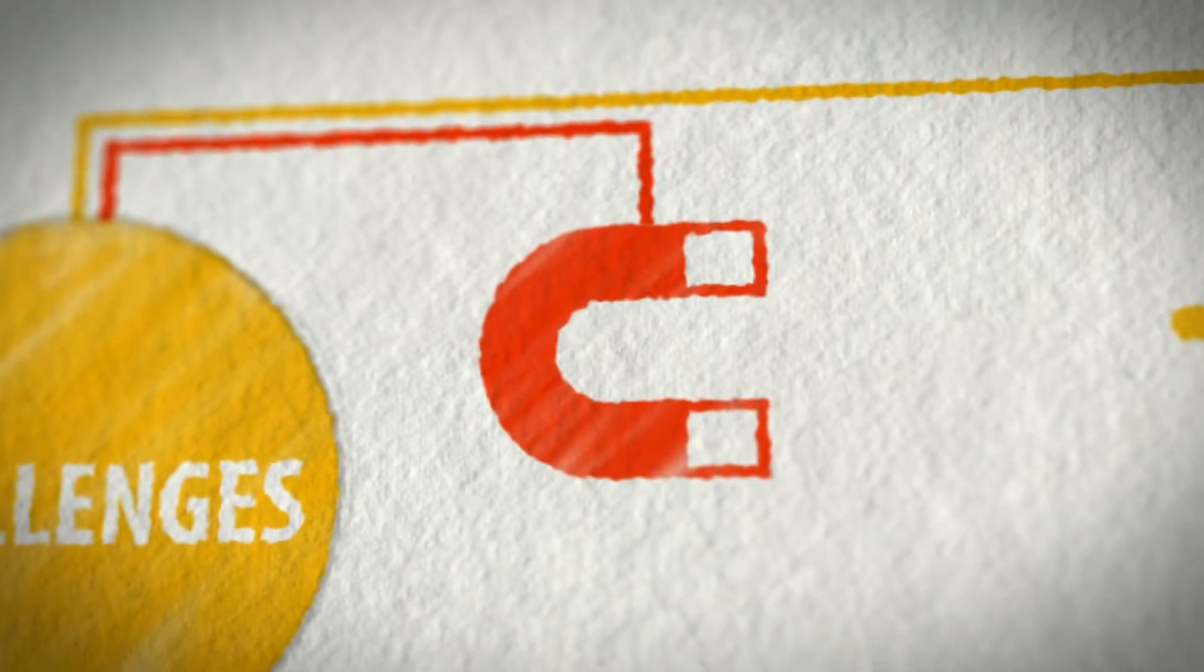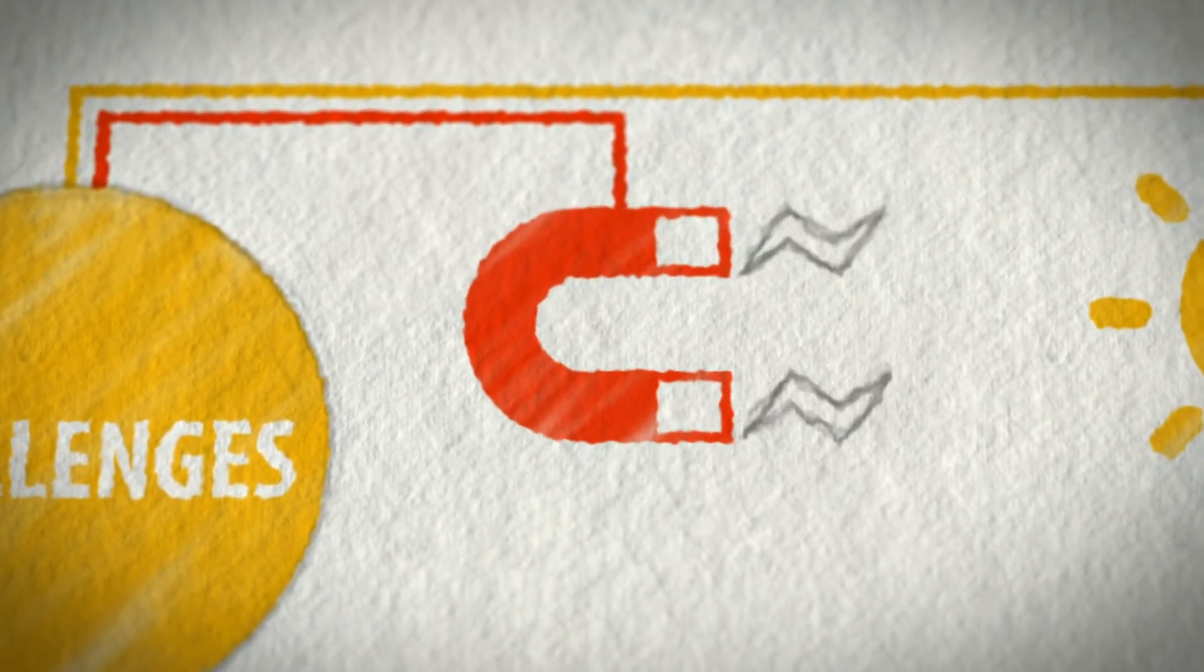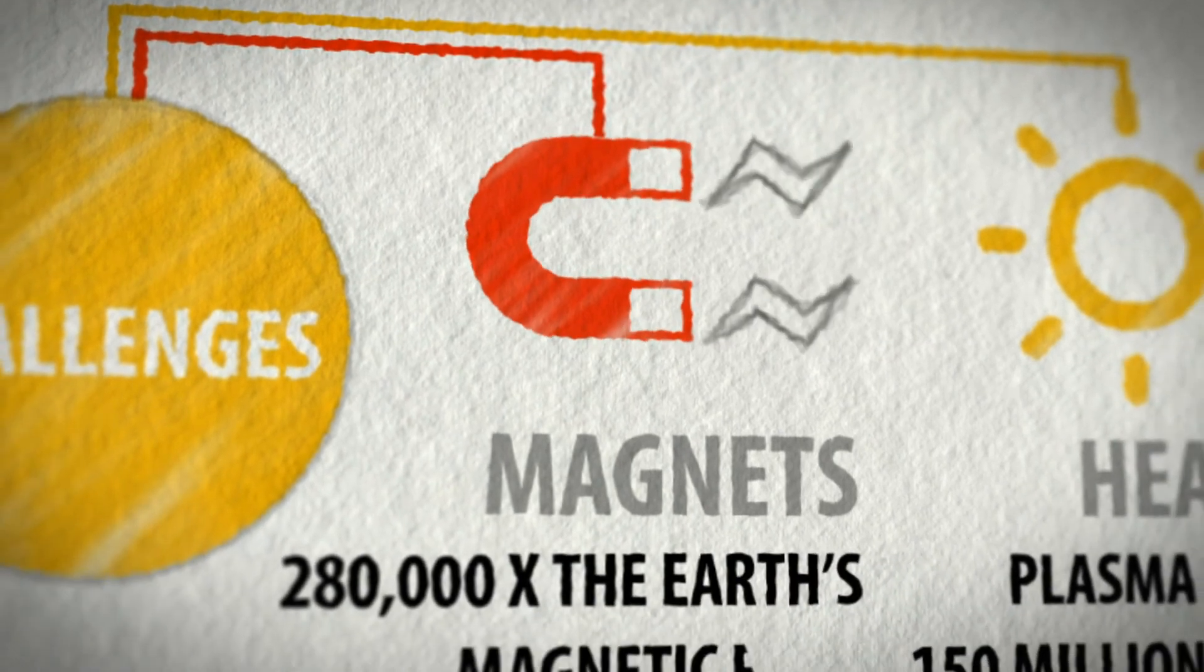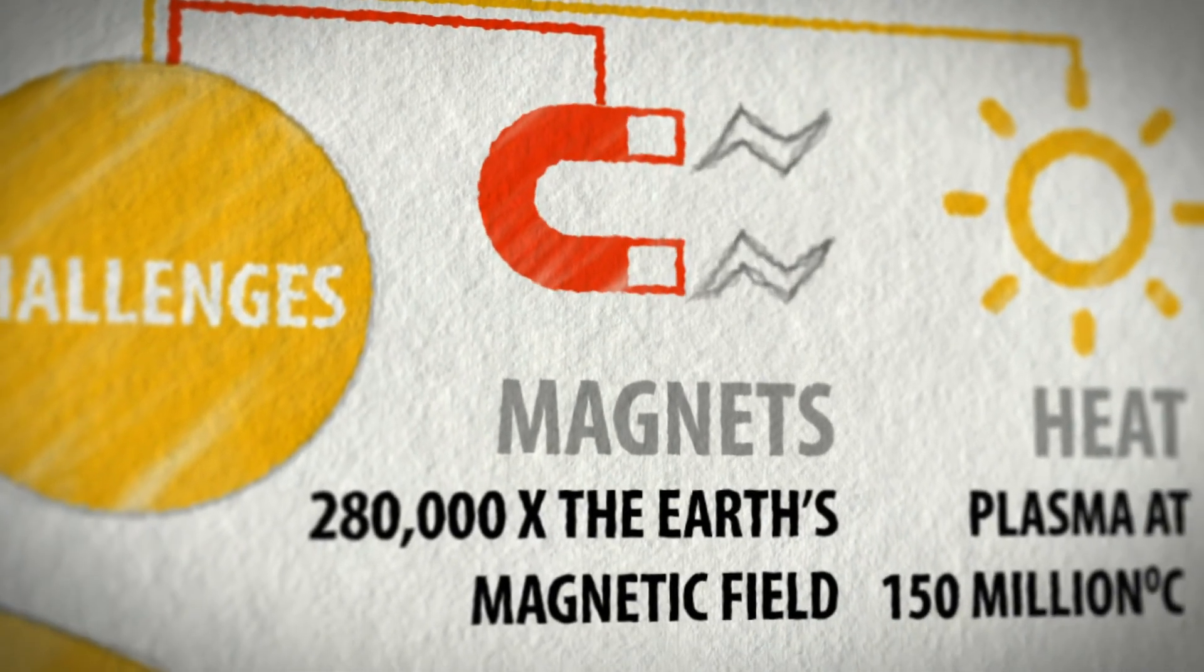Super-sized superconducting magnets, some producing magnetic fields that are 280,000 times stronger than that of Earth, will confine the hot plasma inside the torus.